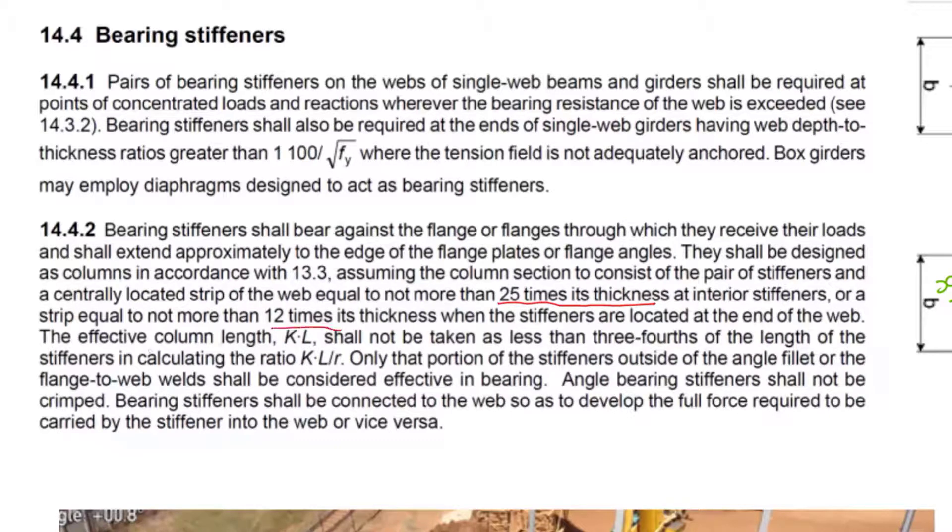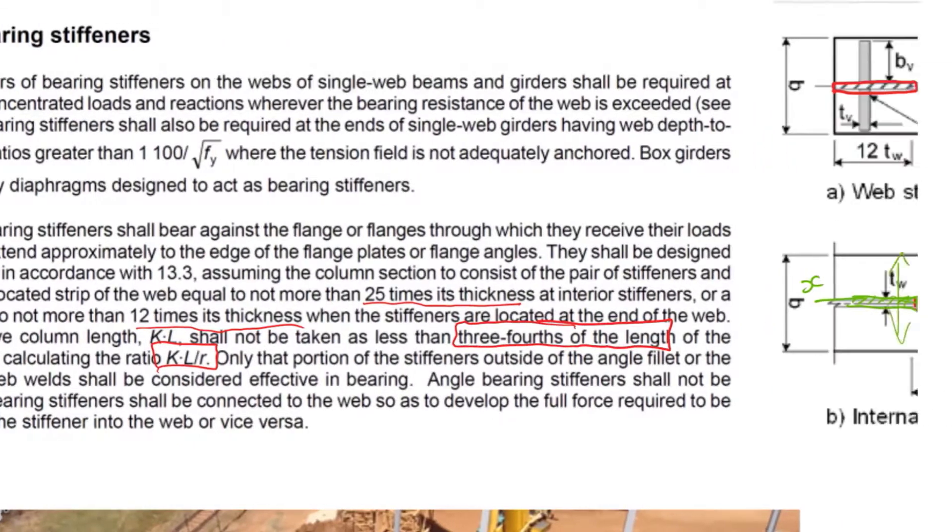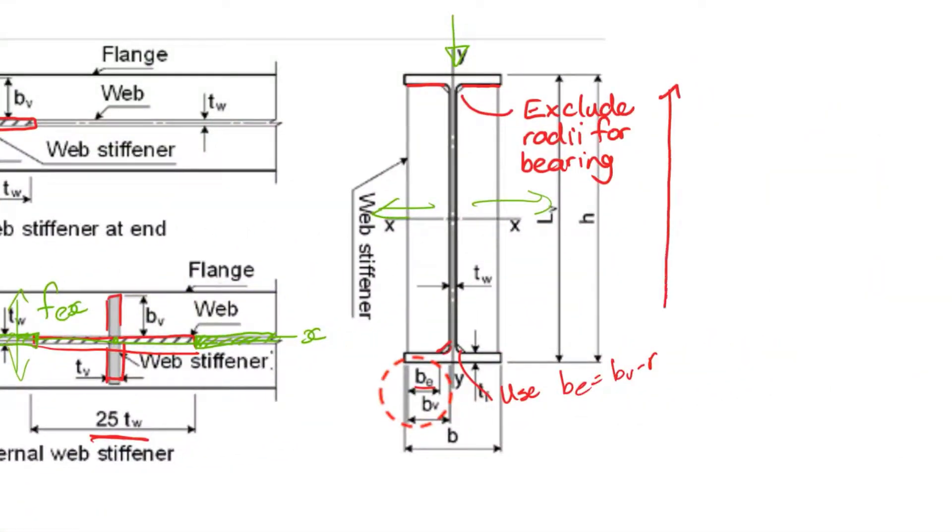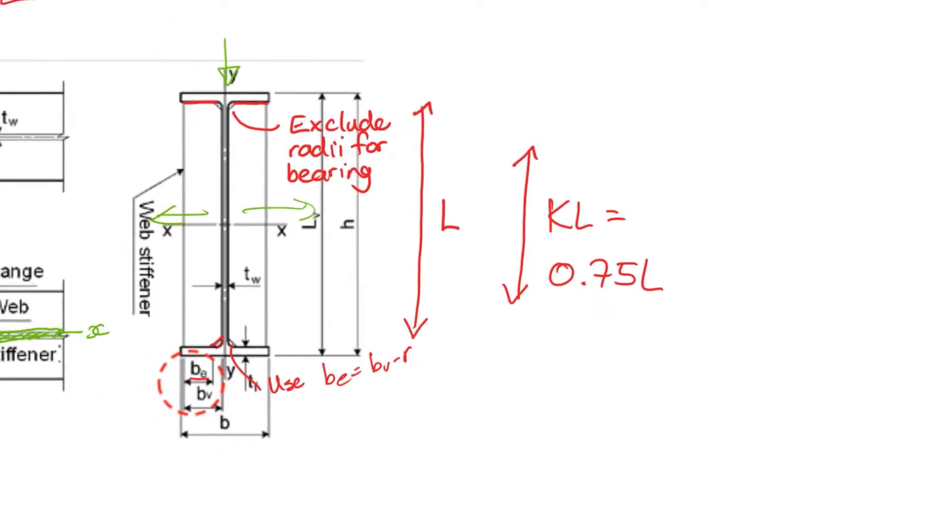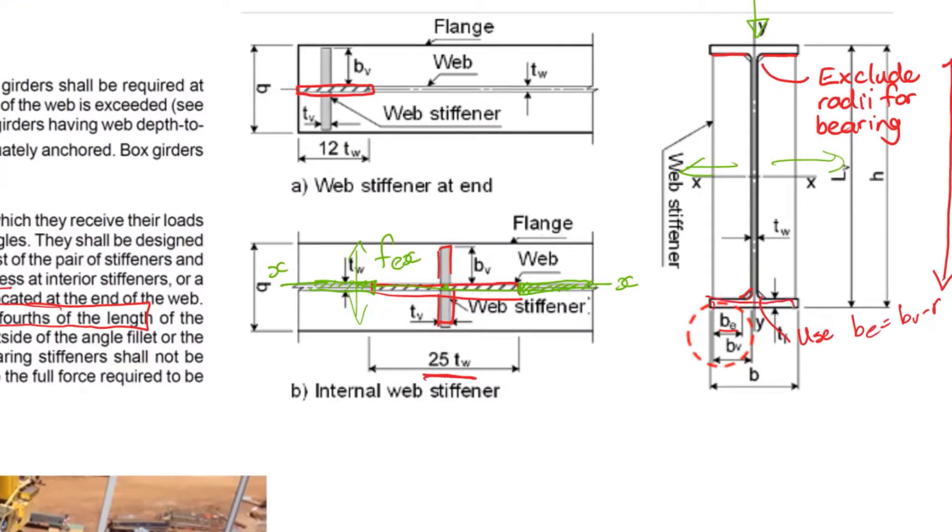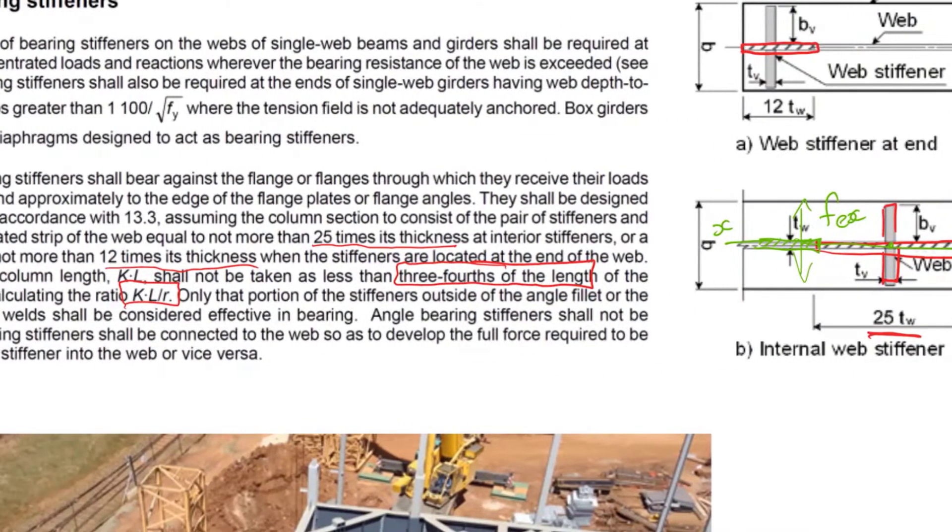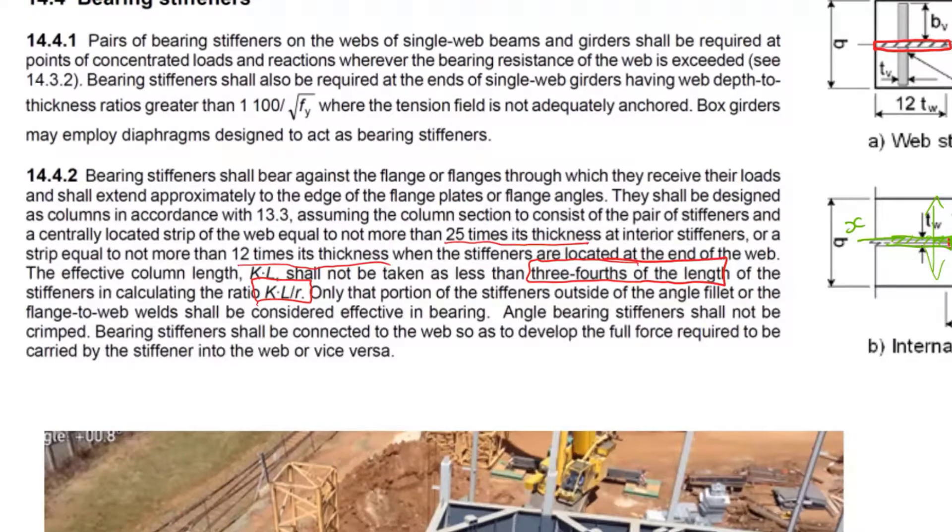Ultimately, this paragraph will tell you all of that plus a bit more. It's just a summary. There's 25 times its thickness for stiffeners or 12 times at the end. You've got to get a kl over r value for buckling. When you design your column, kl equals 0.75l - you use 75% of the overall length because the end flanges provide some restraint.